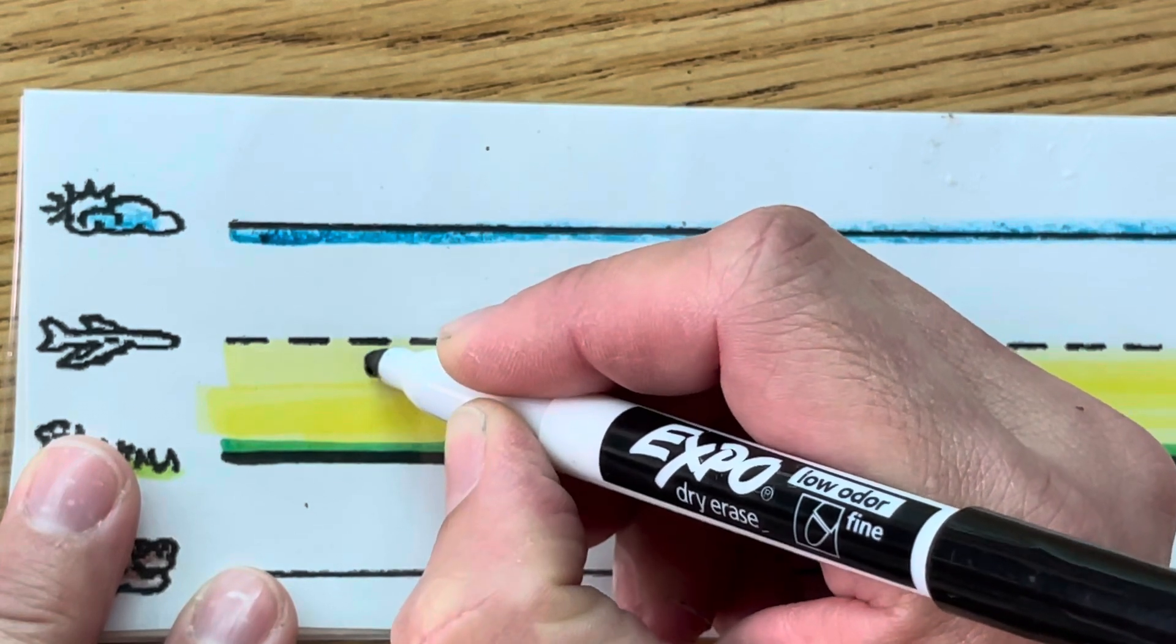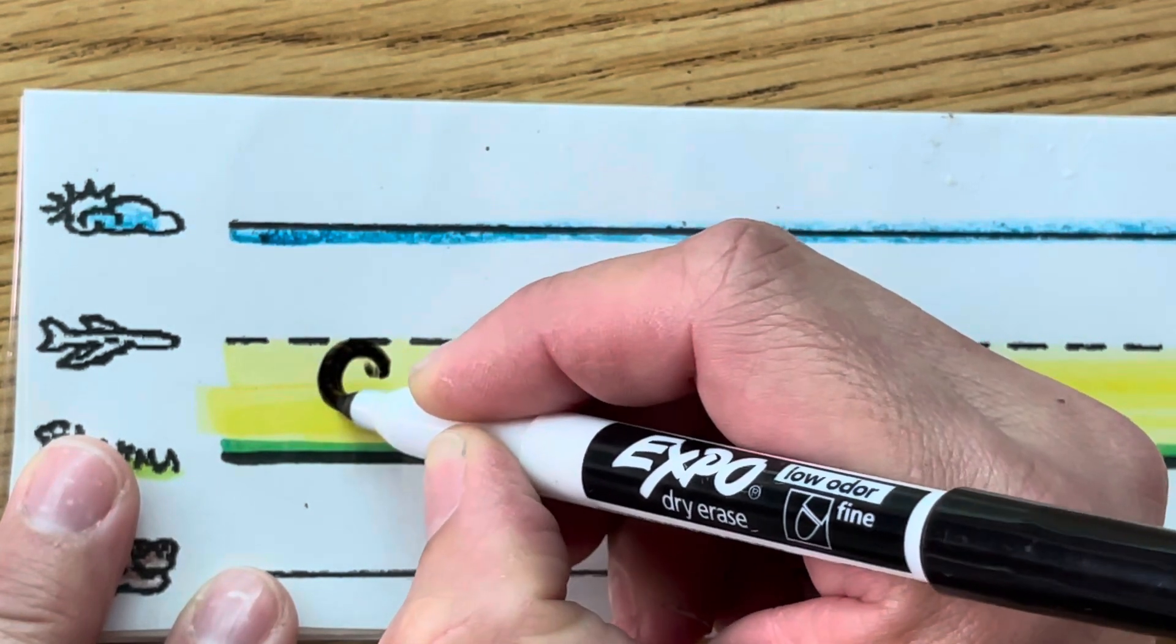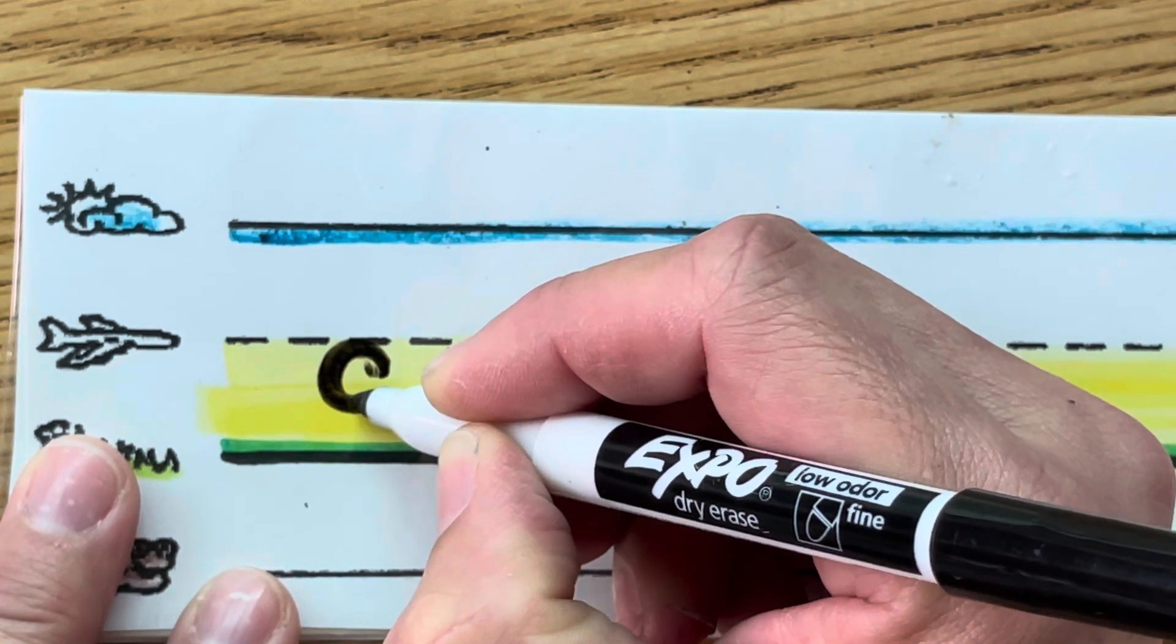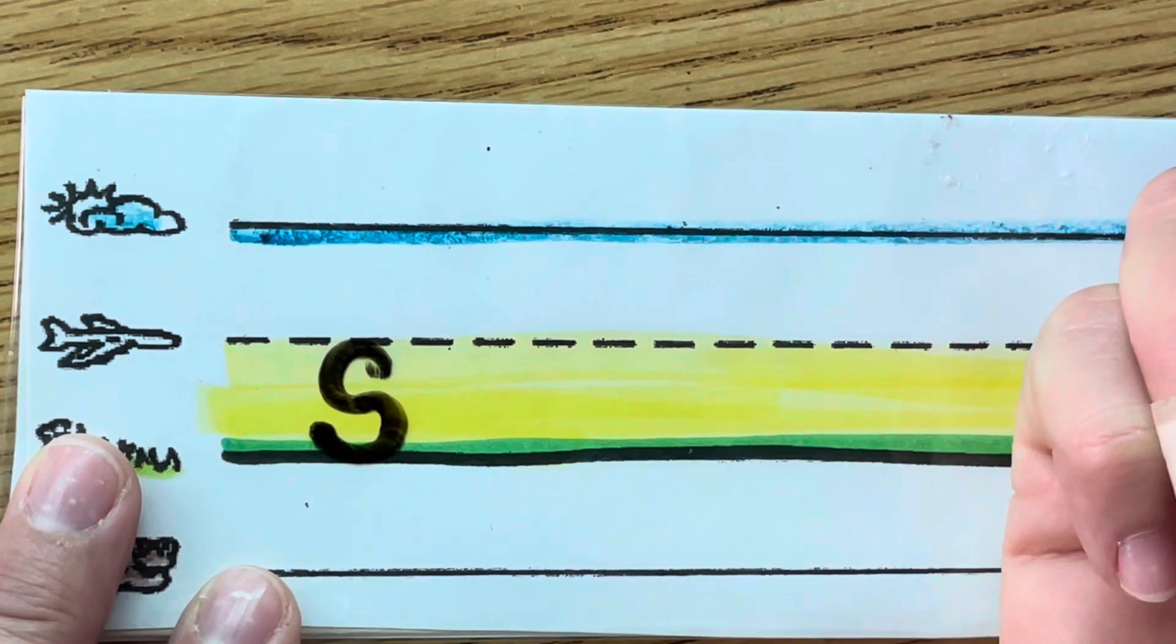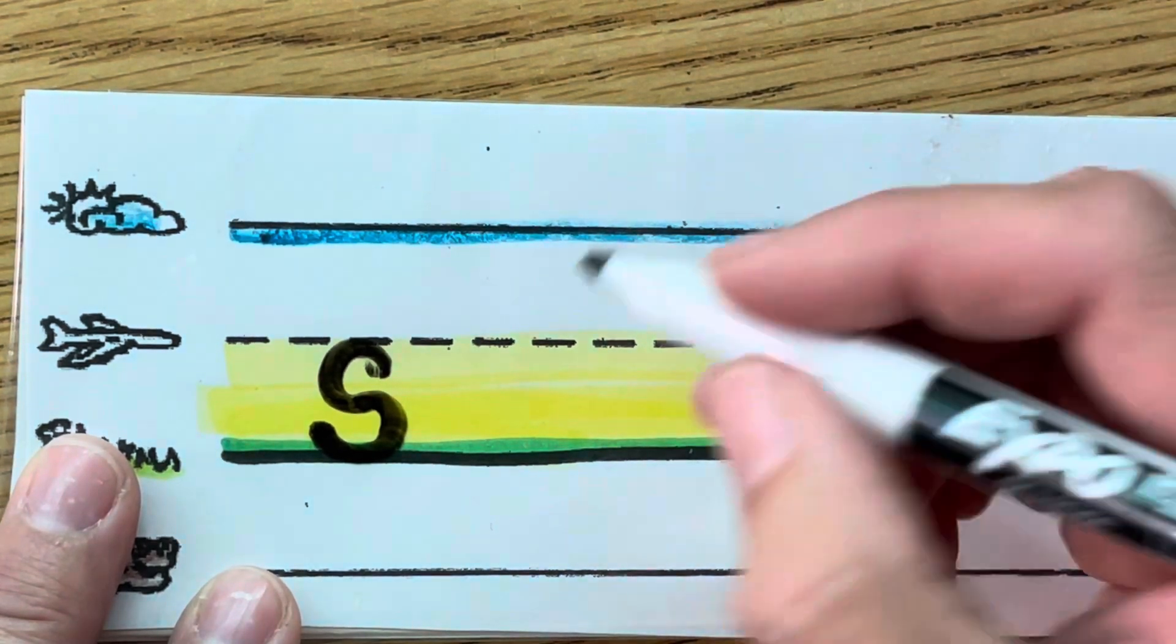He also starts with a little tiny magic C, the littlest magic C, and then it goes around into the grass for a backwards C. Let's do that again.